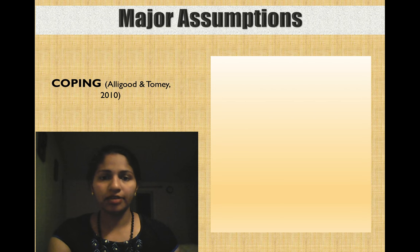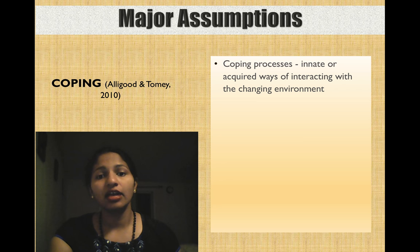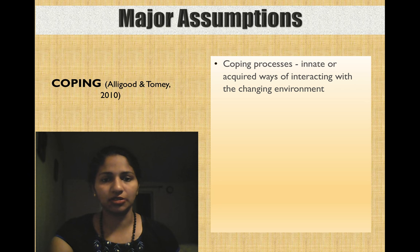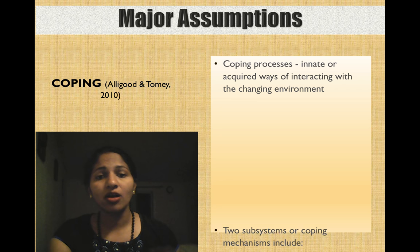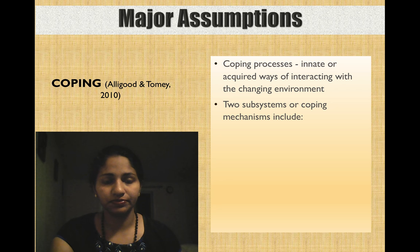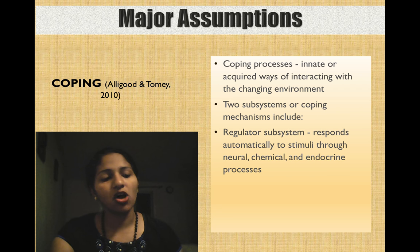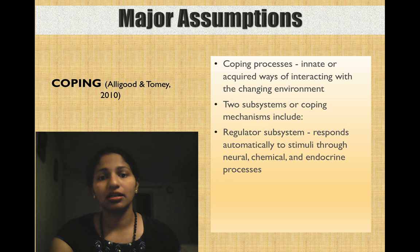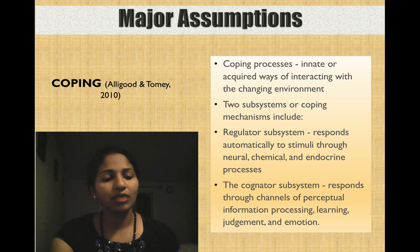Next, Roy explained about coping processes, which are described as innate or outward ways of interacting with the changing environment. These could be automatic responses or learned responses. Two subsystems or coping mechanisms were also explained by Roy: regulator subsystems and cognitive subsystems. Regulator subsystems respond automatically to stimuli through neural, chemical, and endocrine processes, whereas cognitive subsystems respond through channels of perceptual information processing, learning, judgment, and emotion.